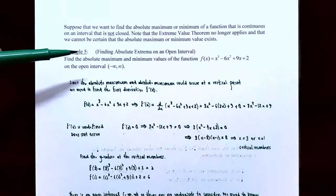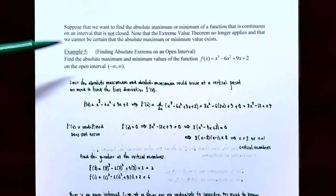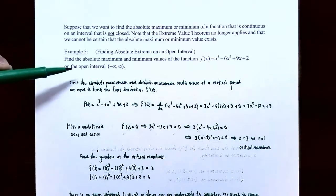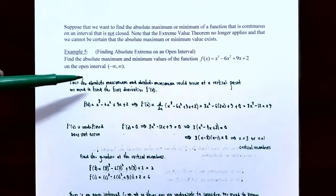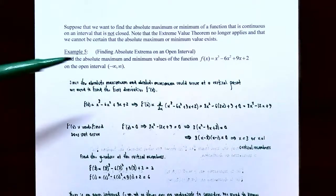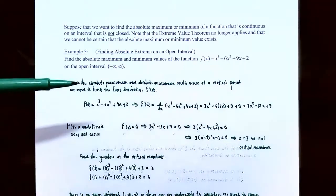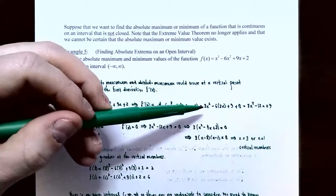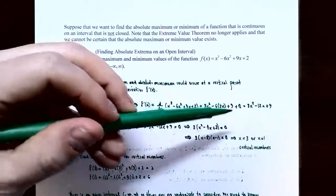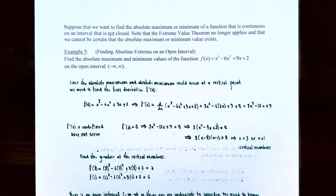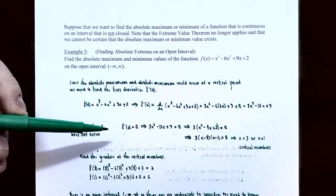Find the absolute maximum and absolute minimum values of f(x) = x³ − 6x² + 9x + 2 on the open interval (−∞, ∞). Since the absolute maximum and minimum could occur at a critical point, let's find f'(x). Using the sum/difference rules and power rule, f'(x) = 3x² − 12x + 9. Notice the derivative is a polynomial function, so f'(x) is never undefined, but the slope of the tangent line could be 0, which gives critical numbers.